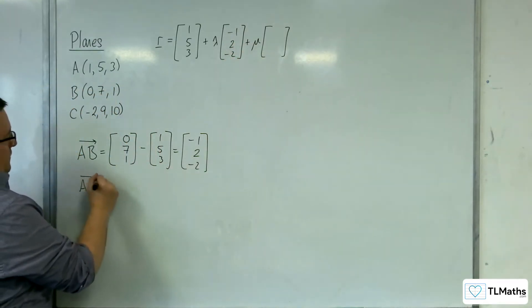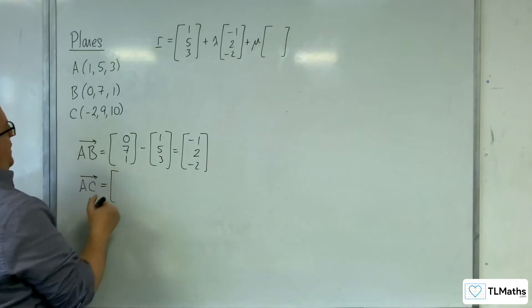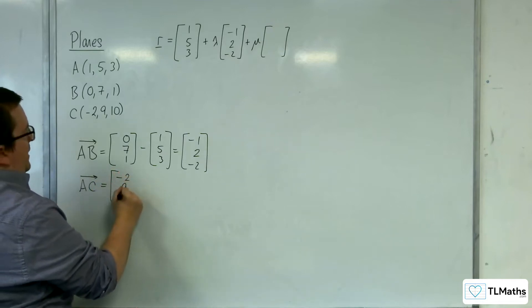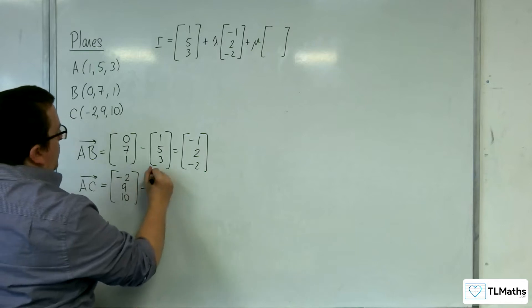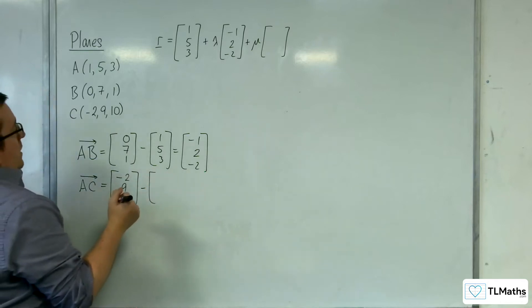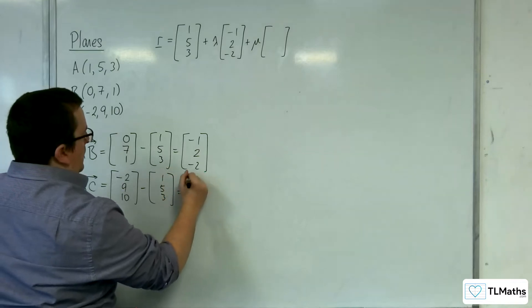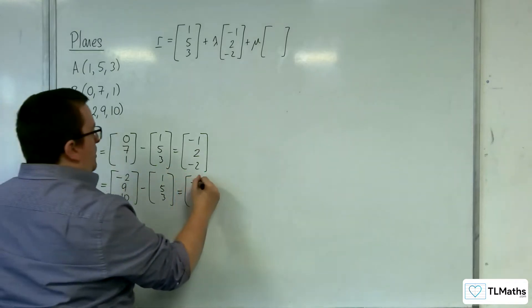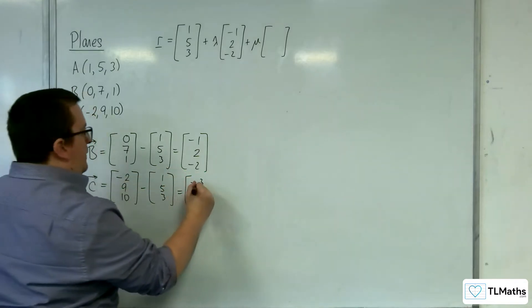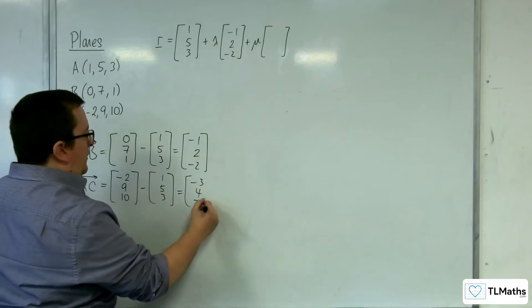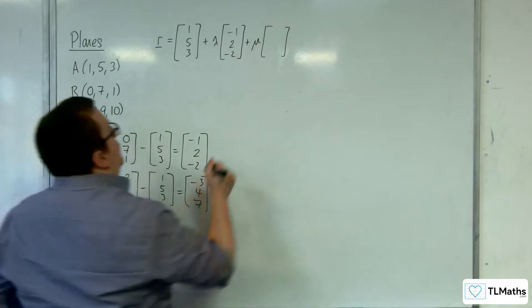Then, AC will be our other direction vector. So that'll be OC, (-2, 9, 10), take away OA, (1, 5, 3). So, minus 2 take away 1 is minus 3, 9 take away 5 is 4, 10 take away 3 is 7. So, (-3, 4, 7).